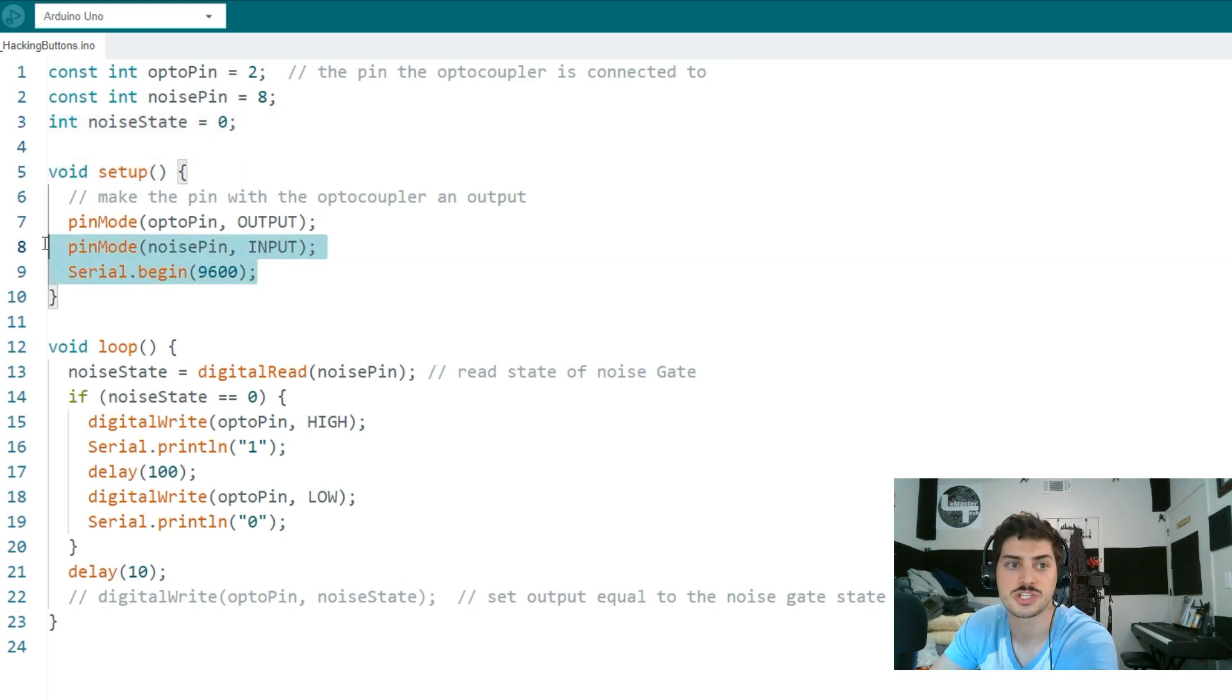In the setup code, which just runs once at the beginning when the machine is first powered on, we're going to set our octocoupler control pin to an output and then our noise pin that we're monitoring to an input. Then I'm just doing serial.begin so that I can monitor and see if everything's working properly from my serial console window to actively monitor the Arduino.